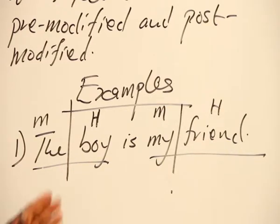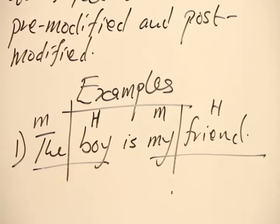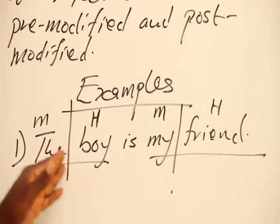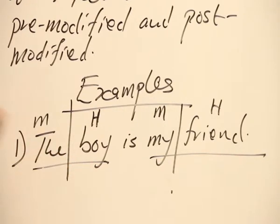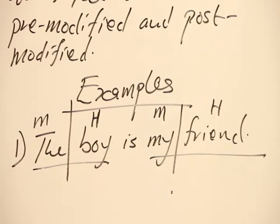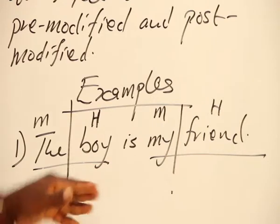And then the head is a noun that we said. Why is it a main word? Because if you look at this sentence, what you have, we can decide to remove the and boy will remain. And there will still be some level of meaning derived from the sentence. But if we remove boy, for example, from this noun,